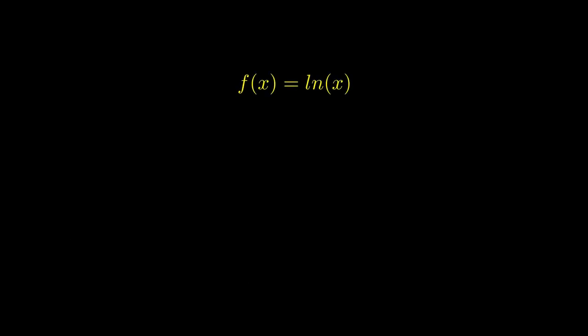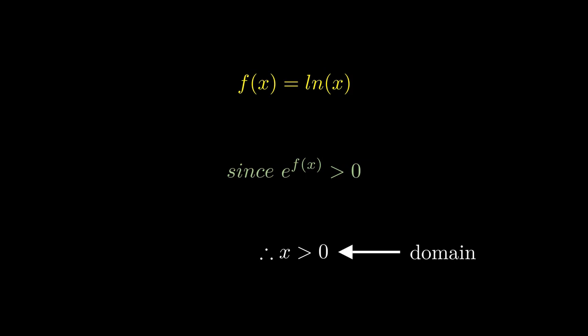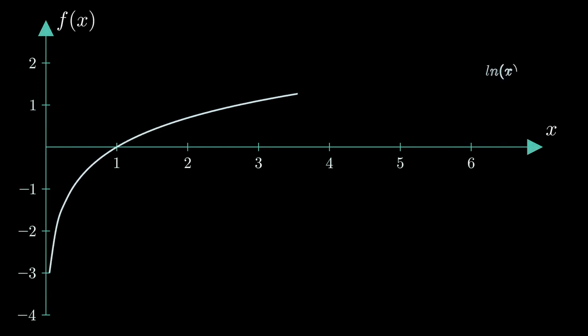For example, let's suppose we have the function f(x) = the natural log of x. What are the possible values of input numbers we can put into this equation? Well, e raised to any power must be greater than zero, so that automatically tells us that x, our input number, must be greater than zero. This is the domain of the function. Now what's the range of output numbers that can be produced from this log function? Let's graph the natural log of x — and as you can see, the range of output numbers this function can produce goes from negative infinity to positive infinity.